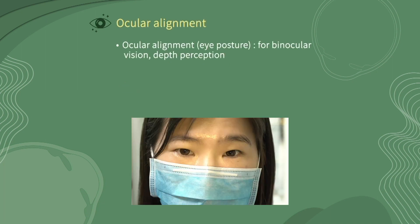Correct ocular alignment or ocular posture is the basis of binocular vision, which can provide depth perception. To examine eye posture, shine a light into the eye and evaluate whether the reflection of both corneas is symmetrical. If they are not, there may be strabismus.